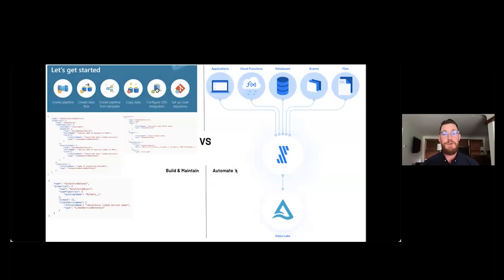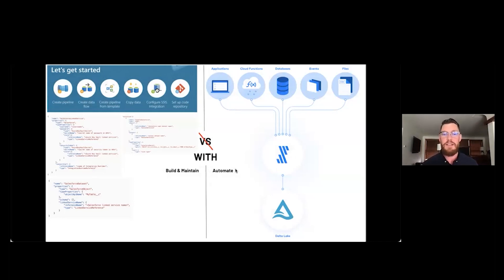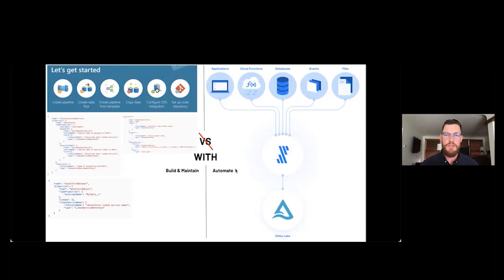Fivetran is no stranger to the original ETL process. The dichotomy between building and maintaining versus automation via Fivetran has traditionally been viewed as competing, but in reality we see it as a joint success story — it's not a versus, it's a with. As engineering teams run lean, efficiency is vital. Customers like Databricks chose Fivetran to offload a portion of their ETL to focus on more impactful business efforts. We hope you see this as an opportunity to explore an alternative that can help your business grow at scale.